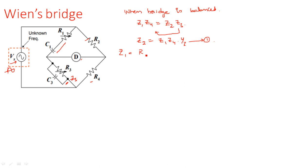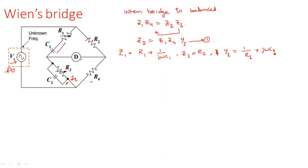From the circuit: Z1 is the series combination of resistance and capacitance, so Z1 = R1 + 1/(jωC1). Since we replaced Z3 with Y3, we write Y3 = 1/R3 + jωC3. This is the advantage of using admittance — we can directly write the expression as a simple addition rather than a complex parallel combination.